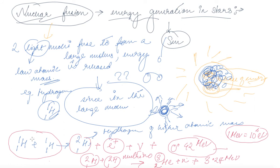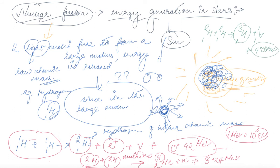There is also a third possibility, where 2H1 plus 2H1 plus 2H1 fuse together to form tritium along with one hydrogen atom and a release of 4.03 MeV of energy. All of these processes can work simultaneously — either the first, second, or third reaction takes place, or all of them occur simultaneously, with the release of the respective amounts of energy.